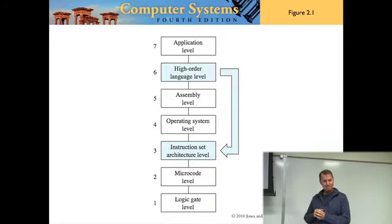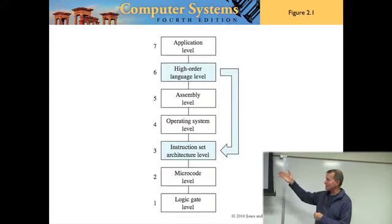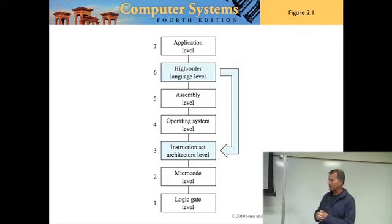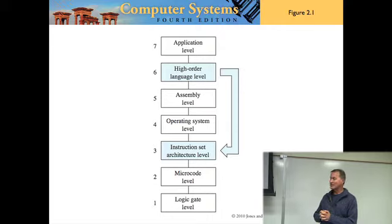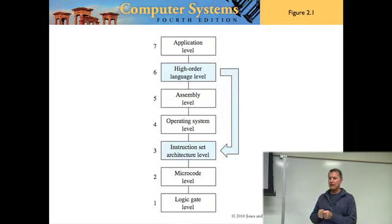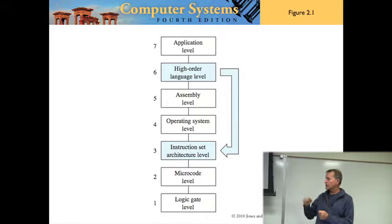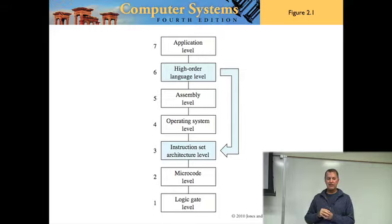Have you memorized this figure yet? Seven is applications, six is high-order language, five is assembly, four is operating system, and five is instruction set architecture level. When you write a program in C++, you are writing at level HOL6, high order language six. Before you can run the program, you have to compile it. The compiler takes that C++ program at level six and translates it to level three — machine language.